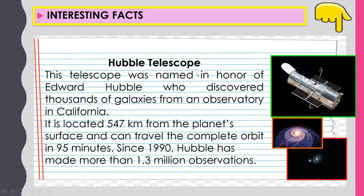Interesting facts — Hubble Telescope: This telescope was named in honor of Edwin Hubble, who discovered thousands of galaxies from an observatory in California. It is located 547 kilometers from the planet's surface and can travel the complete orbit in 95 minutes. Since 1990, Hubble has made more than 1.3 million observations.